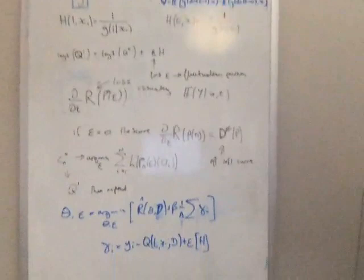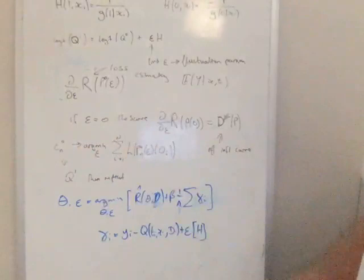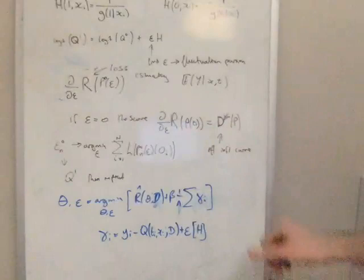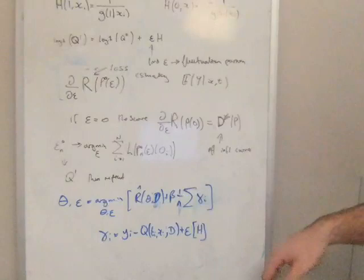And actually, as a sort of side note, when epsilon equals zero, the score, and this is the score here, the derivative of the loss with respect to epsilon is actually equal to the efficient influence curve. And so that's a bit of a side note.